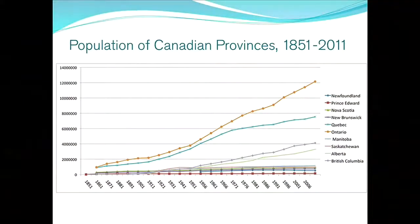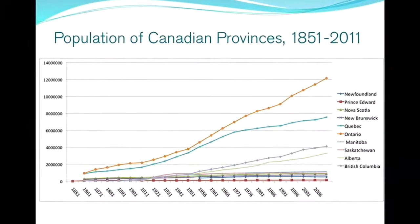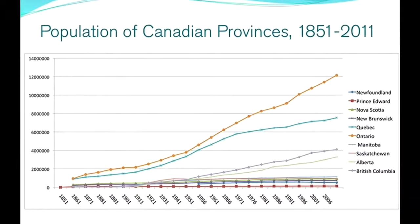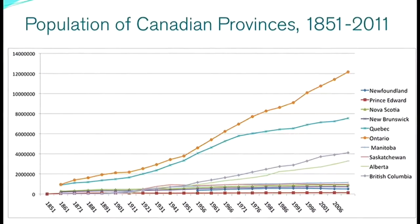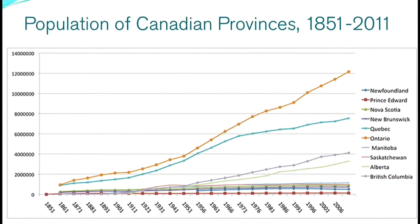We'll start with a long-term view of Canada's population. For those of you that like to get your geek on, the census — which is where all of these results come from — is a real playground, because what we have is uninterrupted decennial counts by province of the number of people living in each region. All you need to notice from this graph is that some lines are going up quite quickly. That orange one along the top is Ontario, just below it is Quebec, then we have British Columbia and Alberta. Other than that, all of the other provinces have more or less bounced along the bottom throughout time.